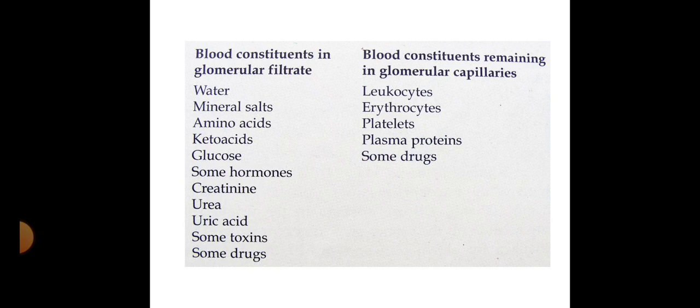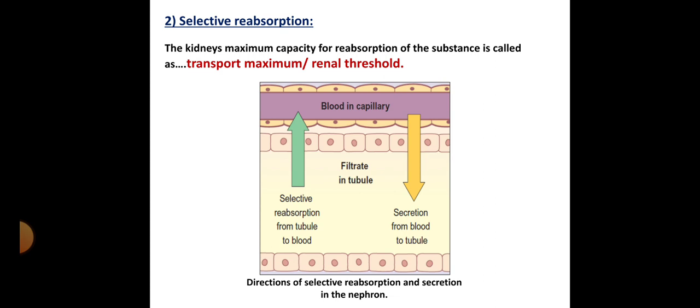The blood constituents that enter the glomerular filtrate include water, mineral salts, amino acids, glucose, some hormones, creatinine, urea, uric acid, some toxins, and some drugs. However, large molecular contents are retained in the glomerular capillaries — these include cells such as leukocytes, erythrocytes, platelets, plasma proteins, and some drugs. So smaller components pass into the filtrate while larger molecules remain in the capillaries.